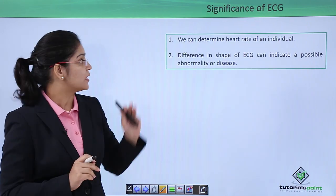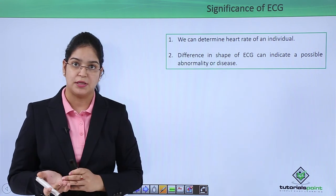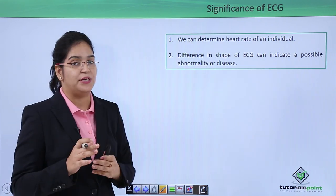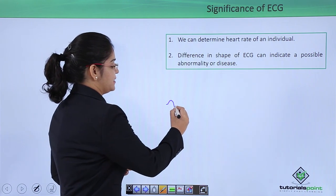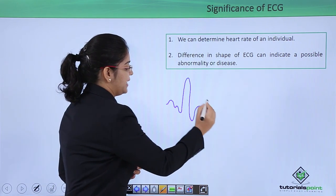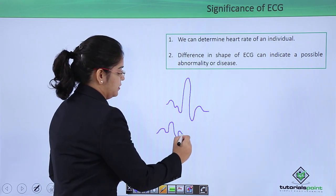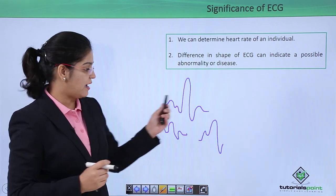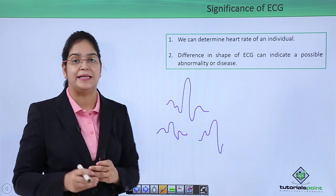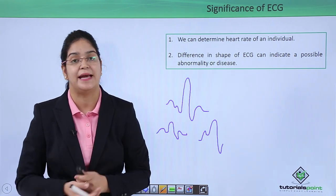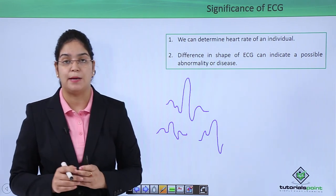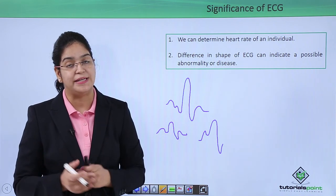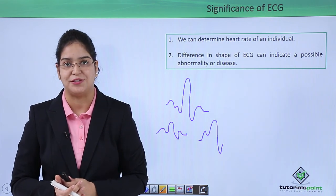The significance of ECG: we can determine the heart rate of an individual. Differences in the shape of the ECG can determine possible abnormalities or disease. The normal shape is standard, but any change — like an altered shape or a missing point — allows a doctor to identify abnormalities or disease. In this video we have learned about the ECG, the process of ECG, the concept of ECG, and the abnormalities we can find out because of ECG. Thank you.